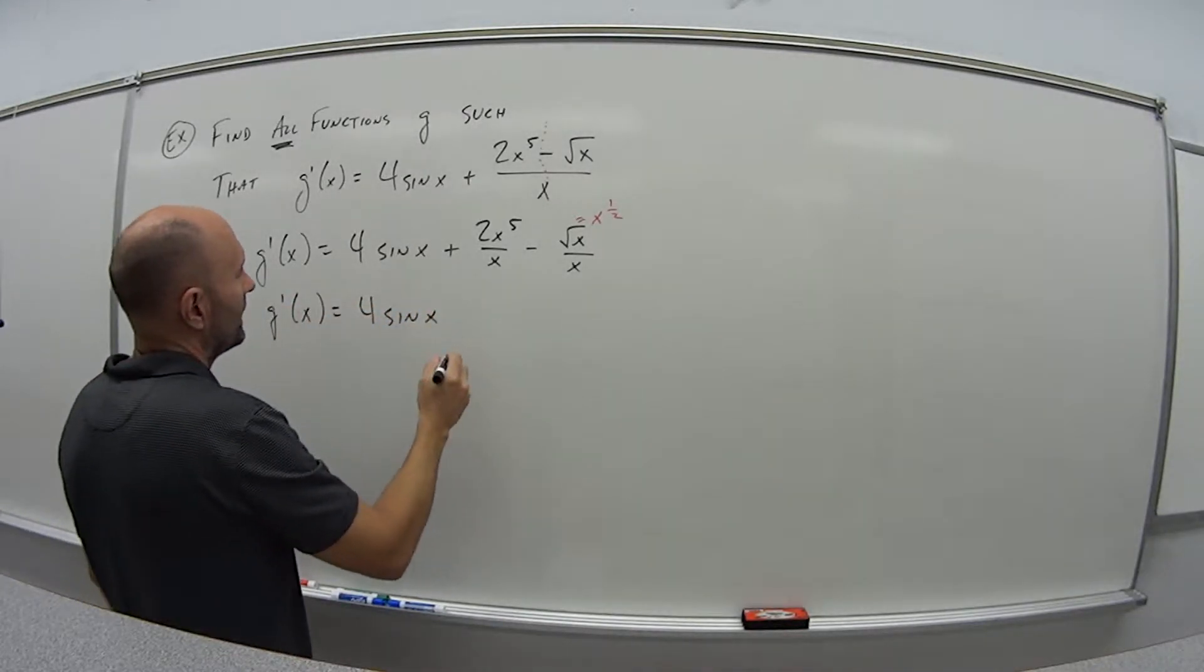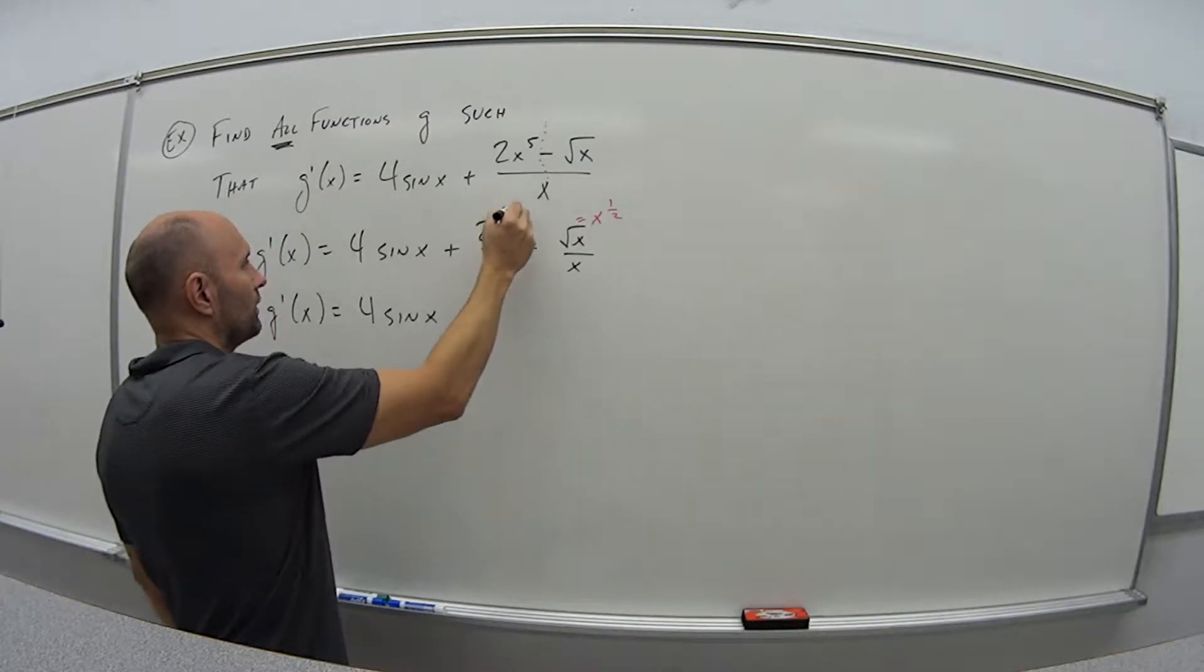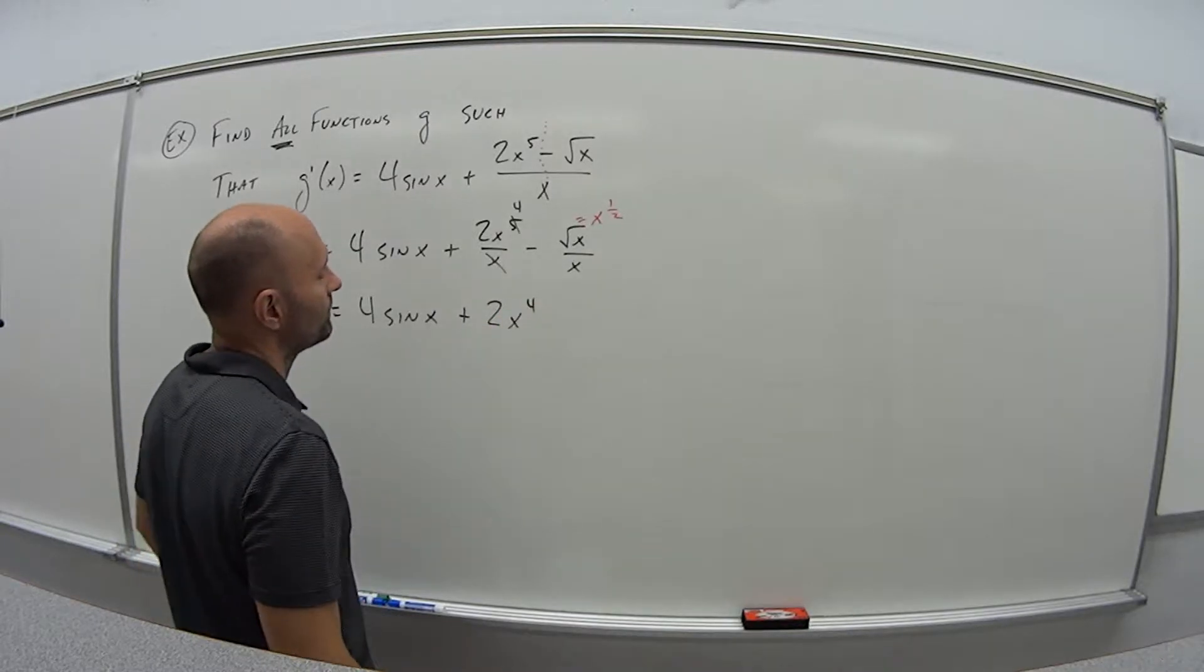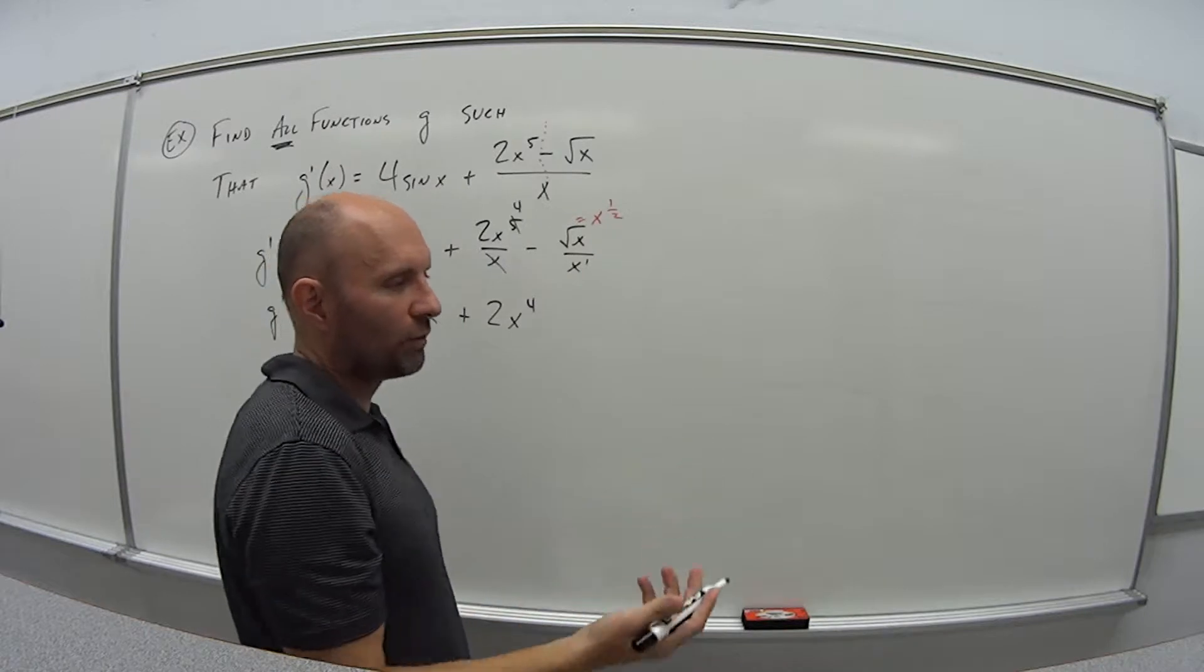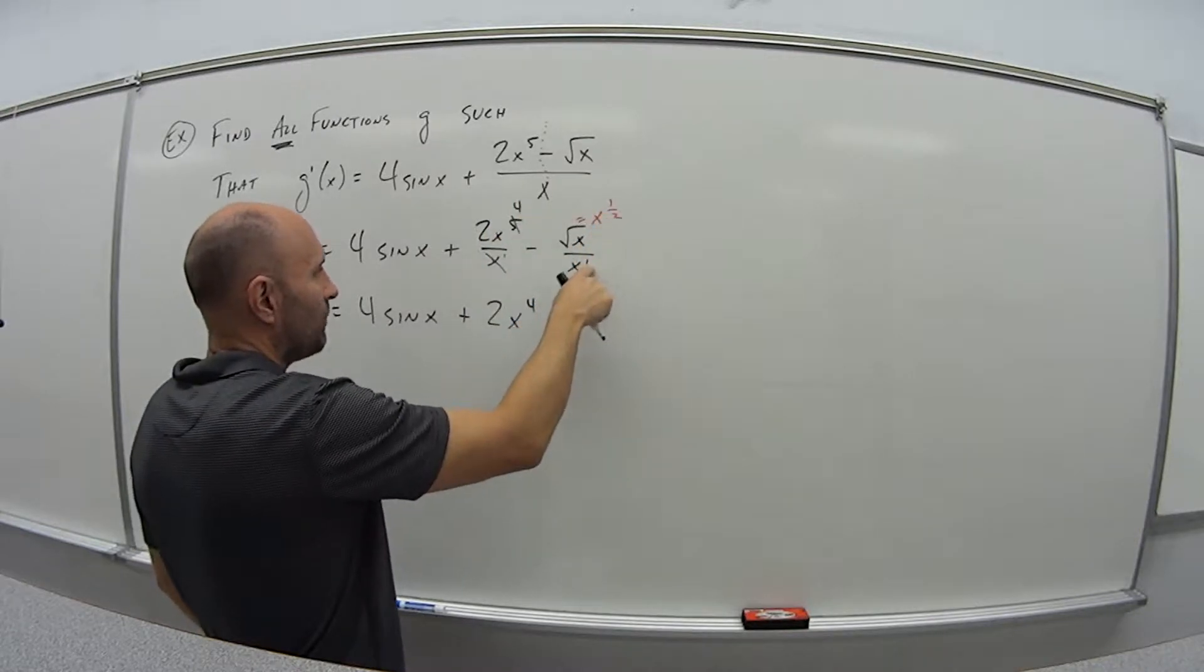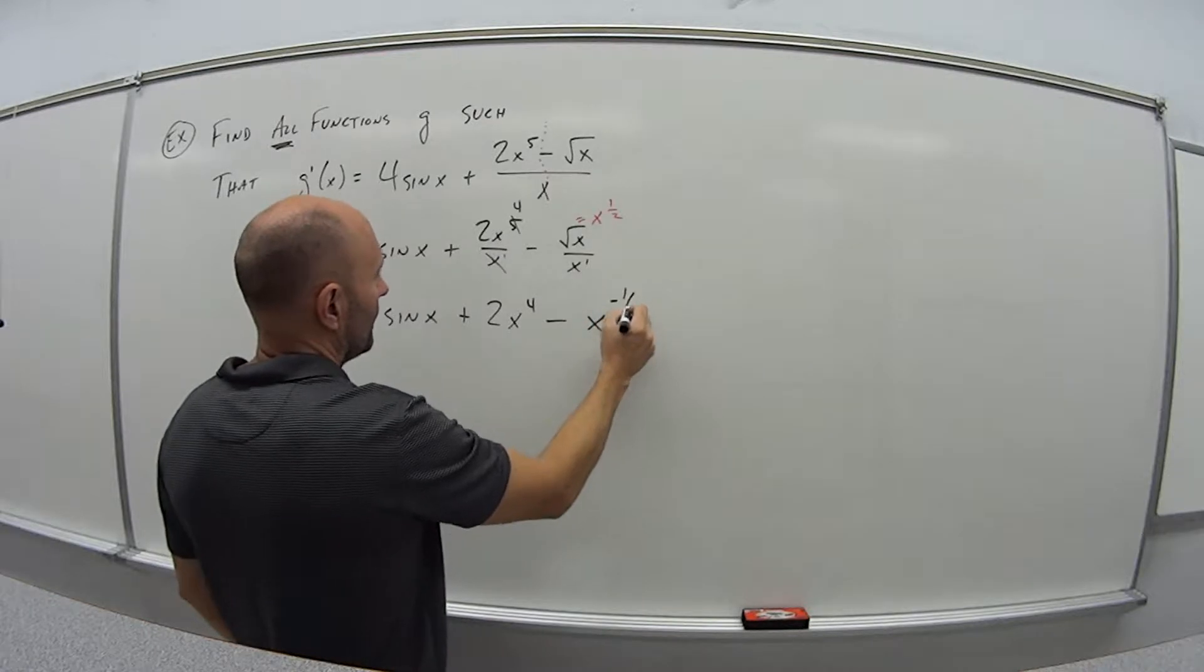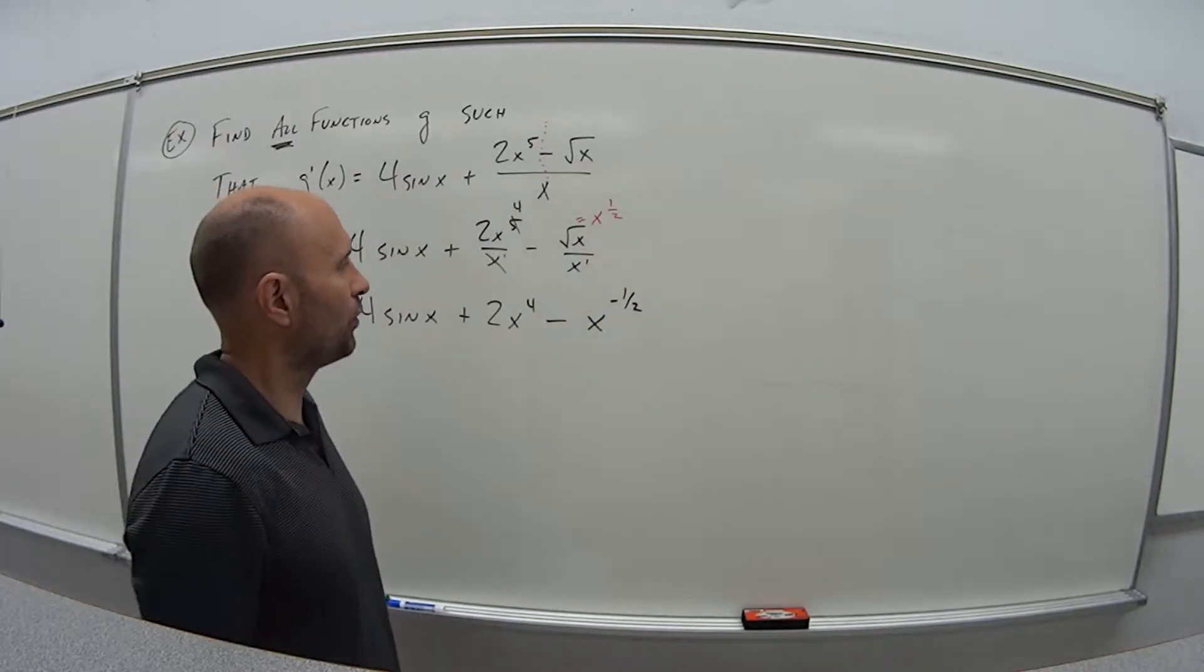Let's simplify this one more time before we get into the antiderivative. So 4 sine of x. One of the x's in the denominator here cancels with one of these, so I'm just left with plus 2x to the fourth. And this is like x to the first power. So we had x to the first in the bottom. 5 minus 1 gives us 4. So 1 half minus 1 is negative half. So this is really like minus x to the minus 1 half.